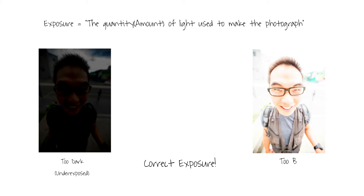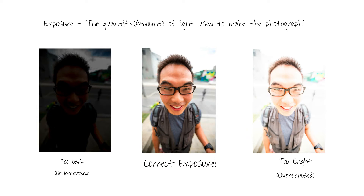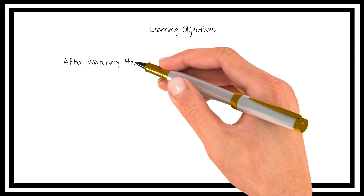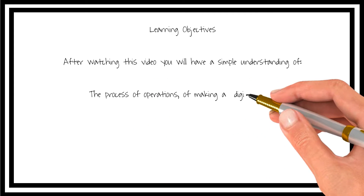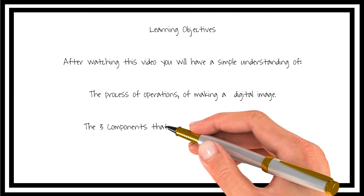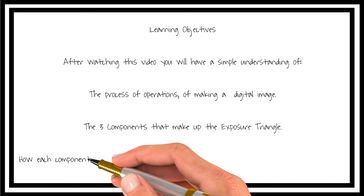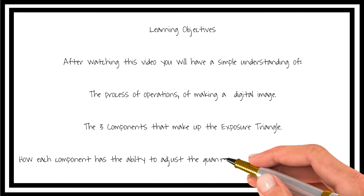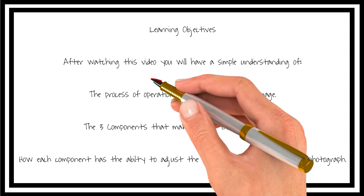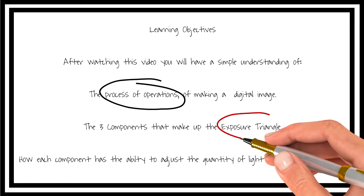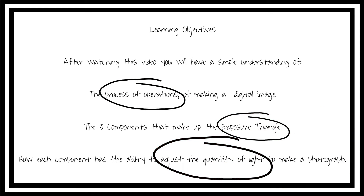Here is an example of an overexposed photograph where the colors are just too bright. Correct exposure is where the brightness level is realistic to the actual scene. After watching this video, you'll have a simple understanding of the process of operations of making a digital image, the three components that make up the exposure triangle, and how each component has the ability to adjust the quantity of light to make a photograph. Pay special attention to the areas I'm highlighting, as these are the key points to take away at the end of this video.